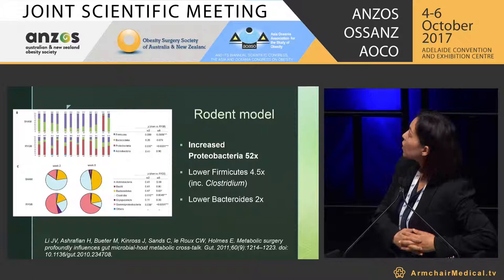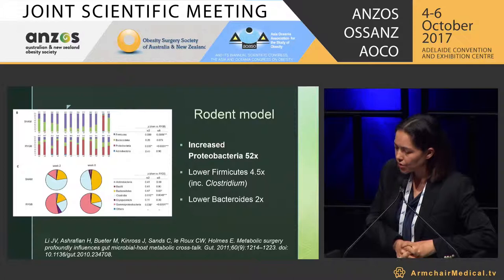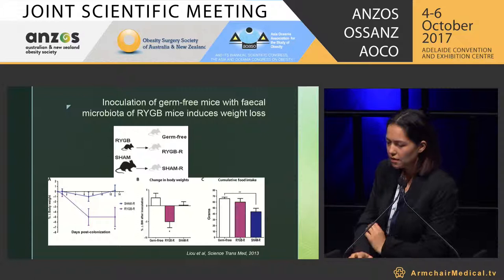There was a lower number of firmicutes — 4.5-fold — and the firmicutes, of course, include Clostridium and Bacilli, including Lactobacilli. There was also a two-fold increase in Bacteroides. These are the three groups I've concentrated on most, because they mirrored the human results, which I'll get to soon. In 2013, a similar procedure was performed with very similar outcomes.